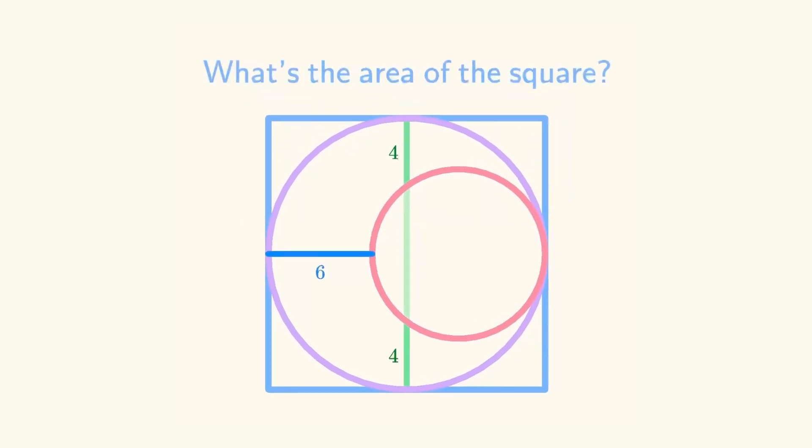This is a square containing an inscribed circle and another smaller circle. We know this distance is 6, and these distances are 4. So, what's the area of the square?